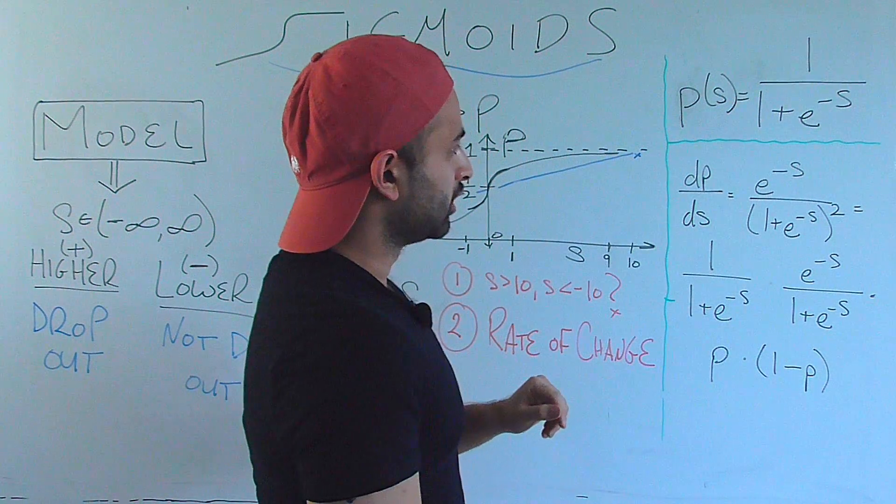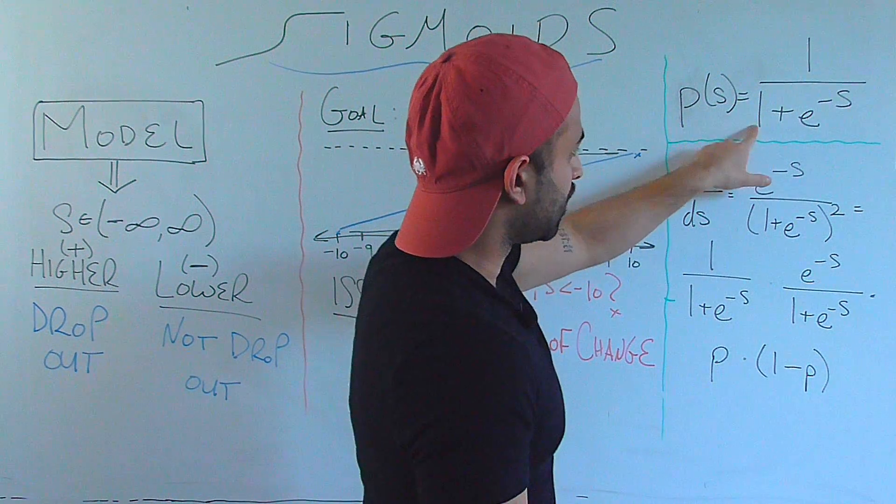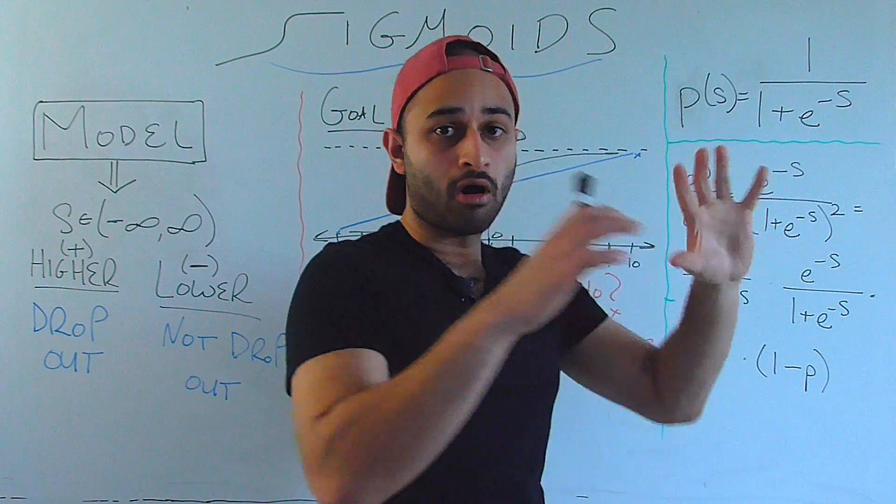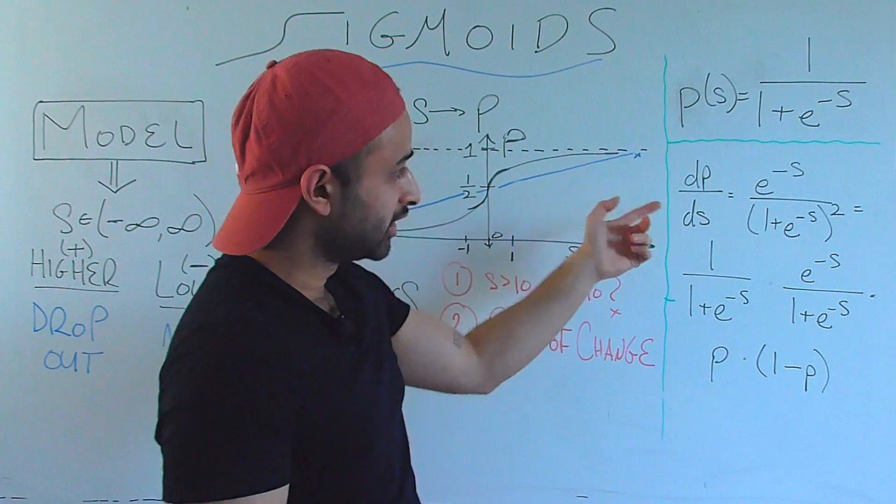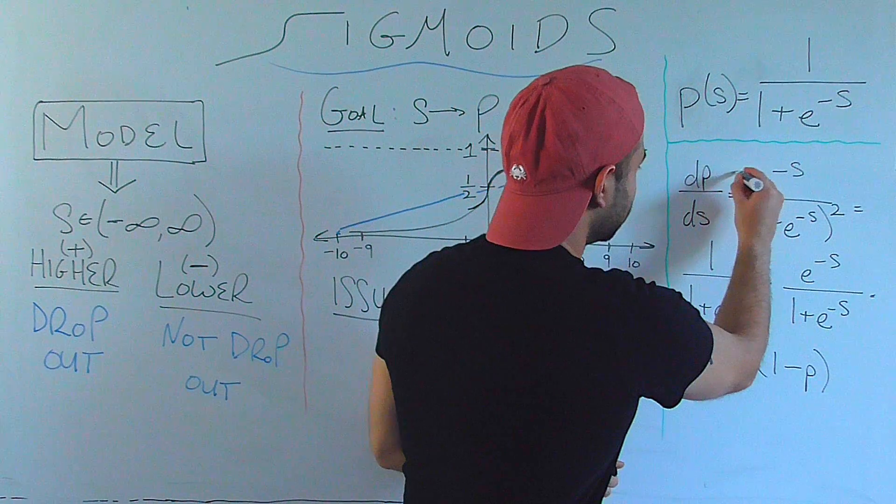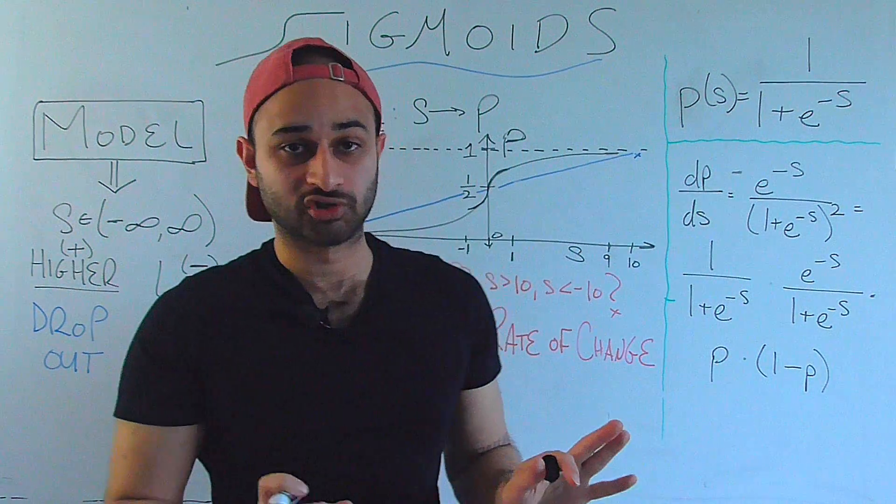This is our function, we're going to be interpreting it as 1 plus e to the negative s all to the power of negative 1, so we use the power rule to bring that negative 1 into the front, which technically it is here, but you'll see why it goes away.